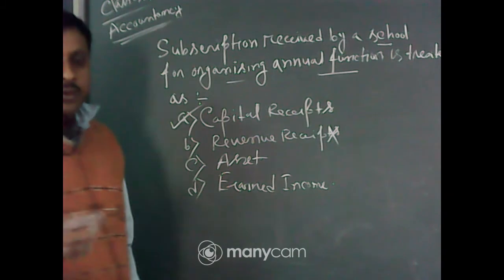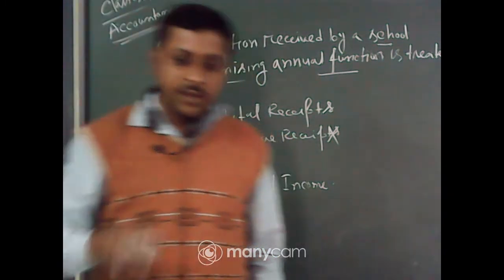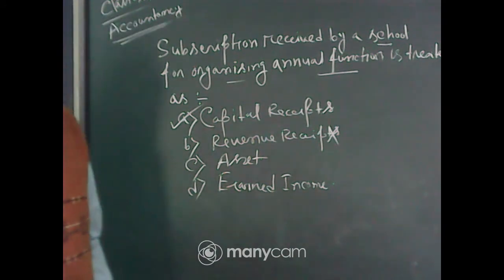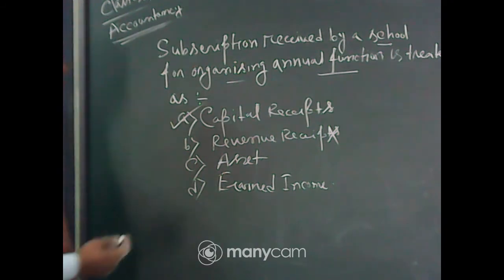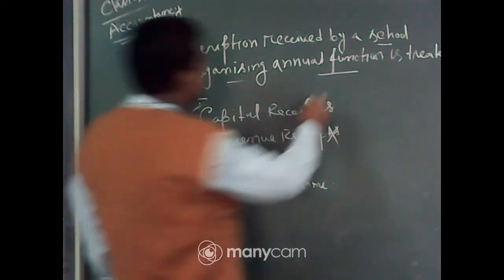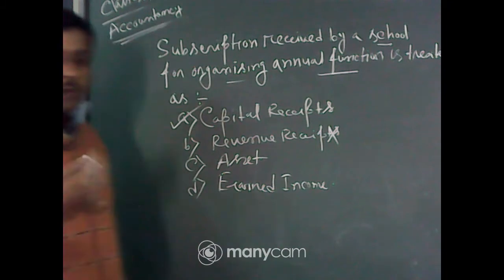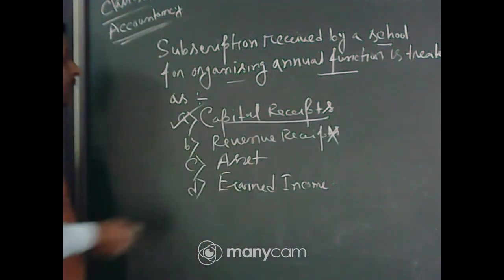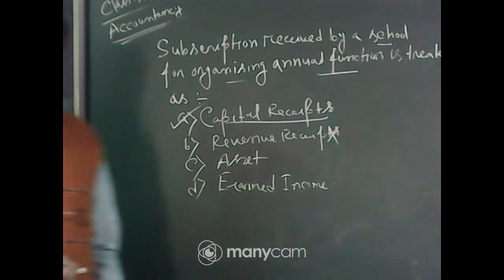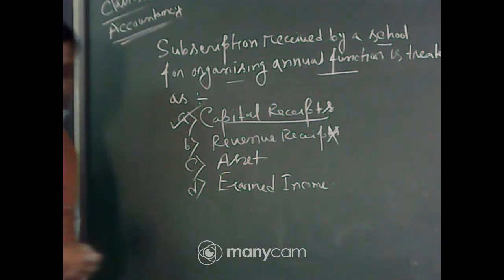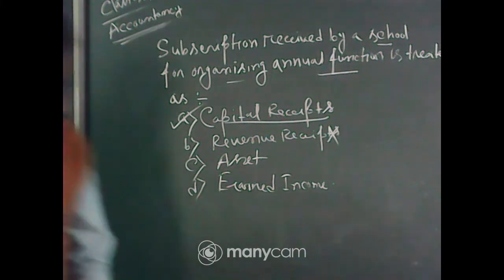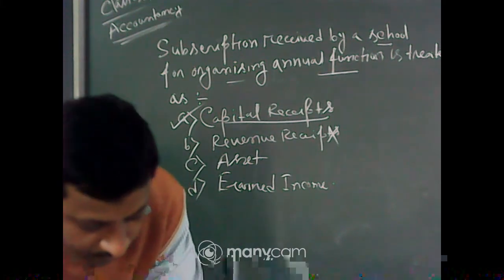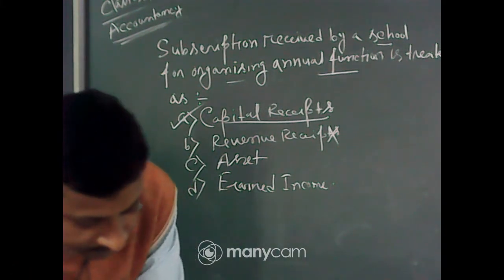Revenue receipts are things we receive in a recurring way — each and every month, like school fees. But for the annual function, the subscription is taken only one time per year. So that is a capital receipt, not a revenue receipt. Option A is the right answer. You should go through the chapter again, otherwise you will face problems. These are very basic questions.